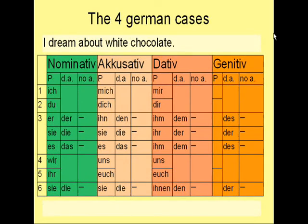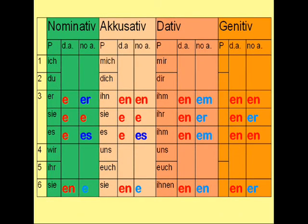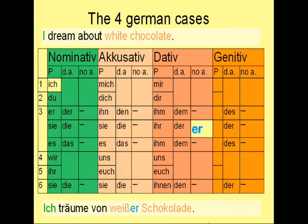Let's try: 'I dream about white chocolate.' In German, to dream about means träumen von. As you learned in my previous lessons, after the preposition von follows the dative case. This means white chocolate is in the dative case, and 'I' is in the nominative case. Looking at the table for feminine dative with no article, the ending is ER. The sentence reads: Ich träume von weißer Schokolade.